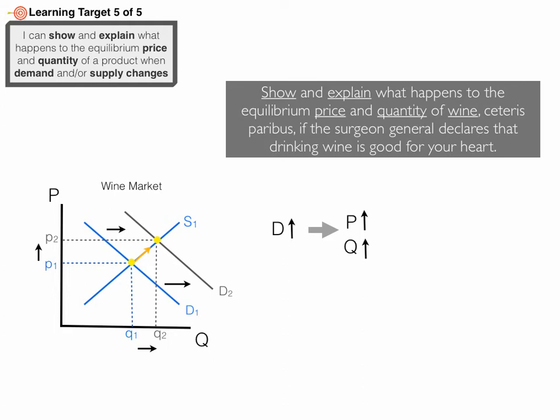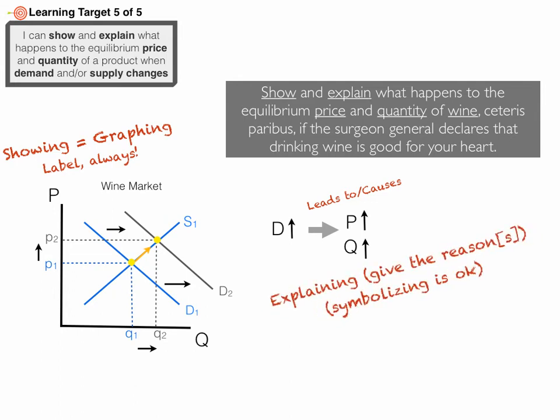We have a movement along the supply curve — we don't have a shift in the supply curve here. The way to read the explanation, which you can use whenever you see 'explain,' you don't have to write it out, you can just symbolize. An increase in the demand for wine is going to lead to the equilibrium price increasing and the equilibrium quantity increasing. Showing means graphing. Explaining means give the reason — price goes up because the demand for wine went up. You don't have to offer any more explanation than that.